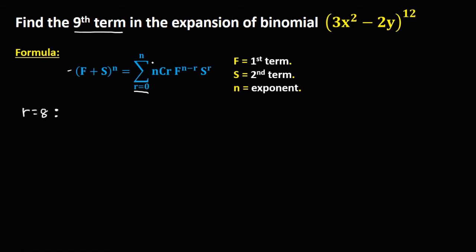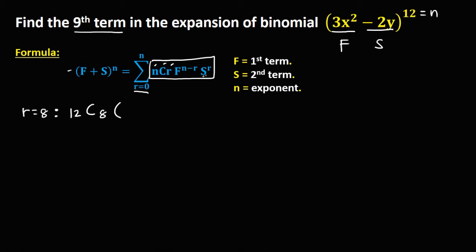Substitute the values into the formula. From the given, 3x squared is the first term, negative 2y is the second term, and 12 is the exponent. So we have 12 choose 8, then times f to the power n minus r — that's 3x squared to the power 12 minus 8 — then times s, which is negative 2y, to the power r, which is 8.